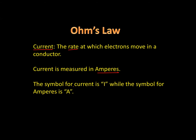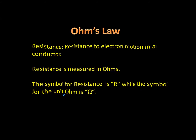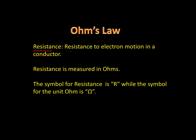The symbol for current is an uppercase I and the symbol for the ampere is simply an uppercase A. Electrical resistance is simply resistance to electron motion in a conductor — you can think of it as electrical friction. Resistance is measured in a unit called the ohm, and the symbol for resistance is an uppercase R.